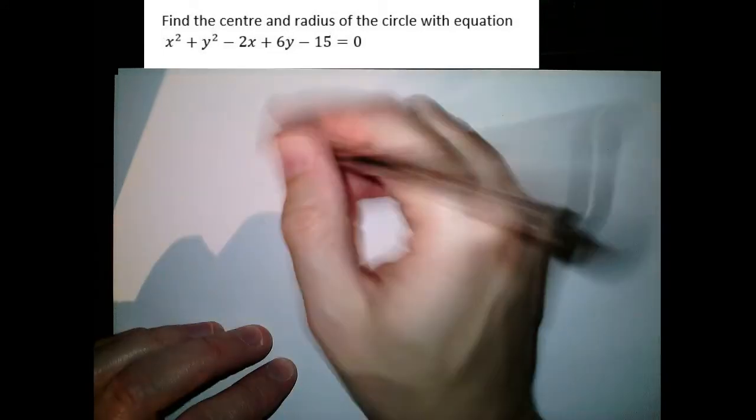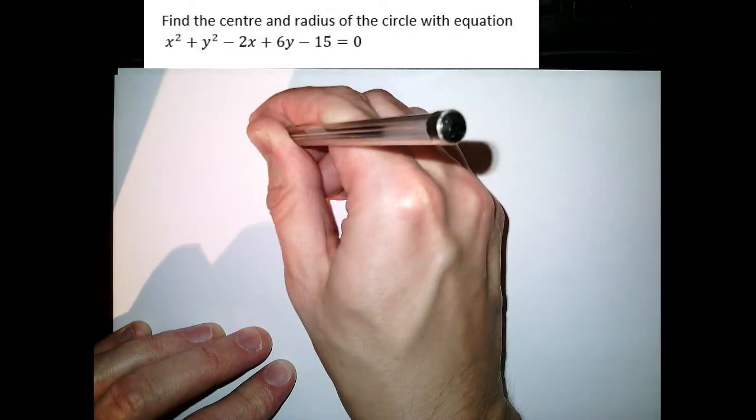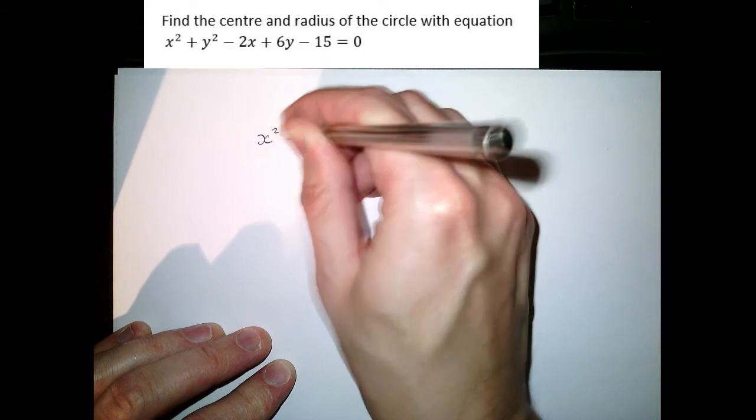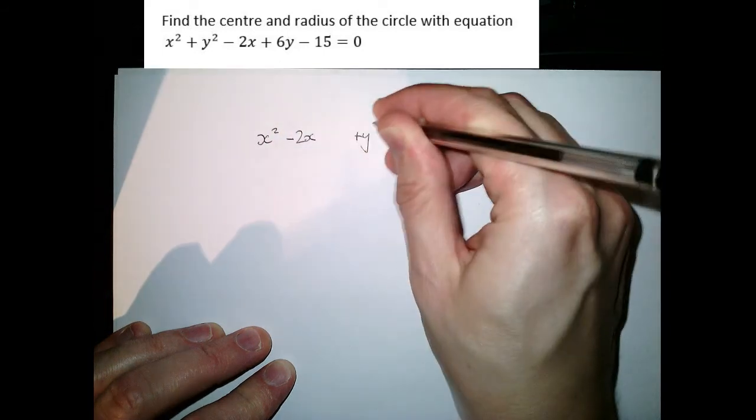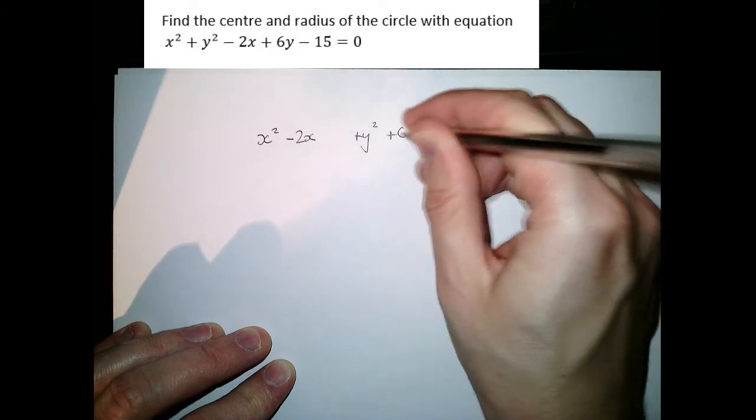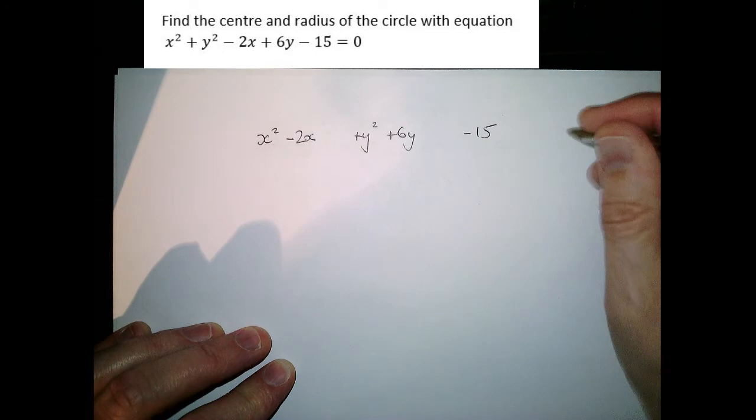I'm actually going to rewrite that in a slightly different order. So let's go with x squared and then the minus 2x and then I'm going to leave a gap, and then we've got y squared plus the 6y, then we'll leave another gap, we've got the minus 15 there and then leave a big gap.